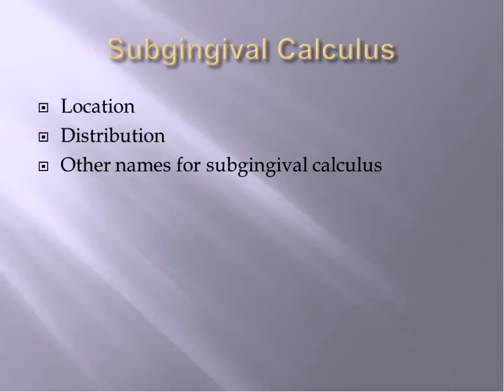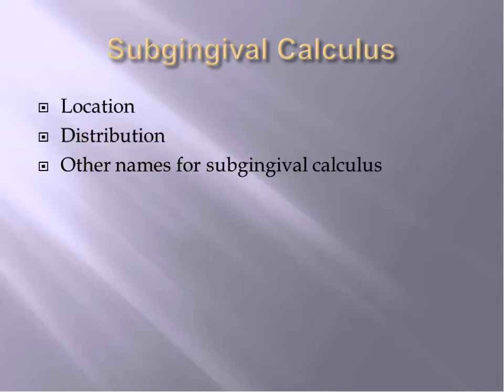Subgingival calculus is located on the clinical crown apical to the margin of the gingiva, extending nearly to the clinical attachment on the root surface. It can also form on dental implants. The distribution may be generalized or localized — a single tooth or a group of teeth. The heaviest deposits are in areas most difficult for the patient to access during personal oral biofilm removal. If they can't disrupt the biofilm, it will pick up minerals and form into calculus.